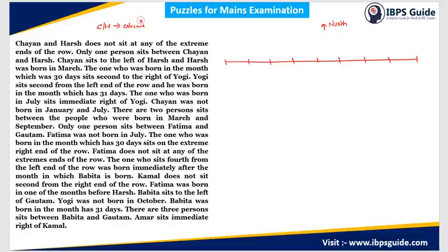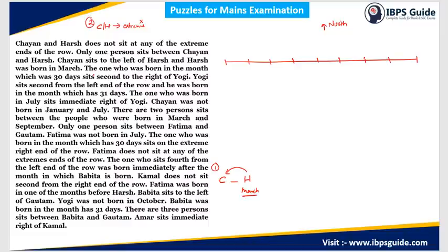Next clue: the person born in a month with 30 days sits second to the right of Yogi. Since we don't know Yogi's position yet, we'll use this later. Then: Yogi sits second from the left end of the row, so Yogi is at position 2. Since the person born in a 30-day month sits second to the right of Yogi, that person is at position 4. Yogi himself was born in a month having 31 days.